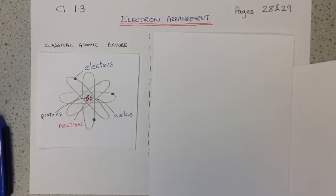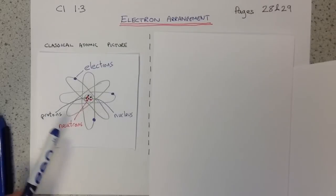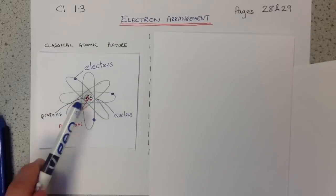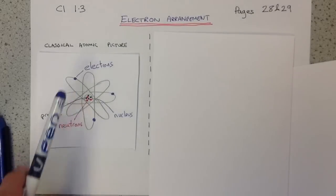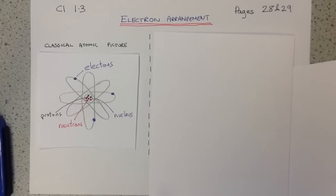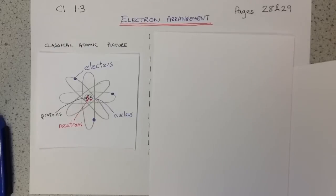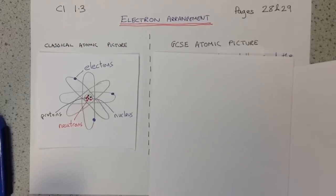Our classical atomic picture, one we've seen in the last two videos — our nucleus at the centre, our protons and neutrons in the nucleus, our electrons going around the outside, very much like the nuclear symbol you see at the start of every Simpsons episode — is all well and good. However, for our GCSE atomic picture, we need a little more detail, and we're going to look at that now.